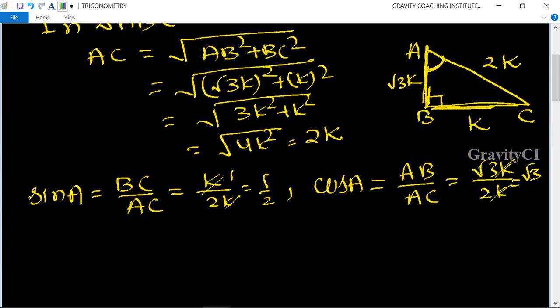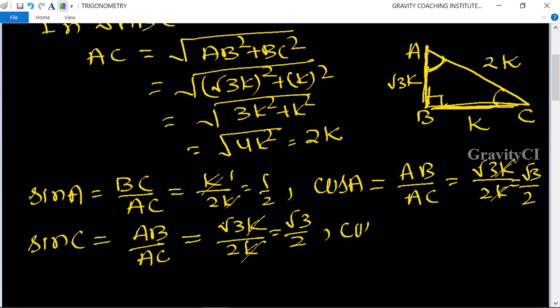Sin C equals AB upon AC. So sin C is P by H, then AB equals root 3k and hypotenuse is AC which is 2k. K cancels, so root 3 upon 2. And cos C is B by H, then base is BC and hypotenuse is AC, so k upon 2k. K cancels, so it equals 1 upon 2.